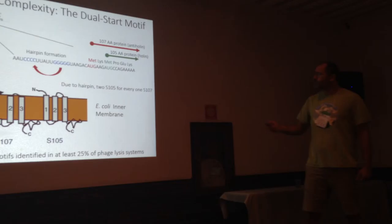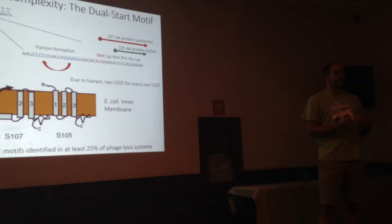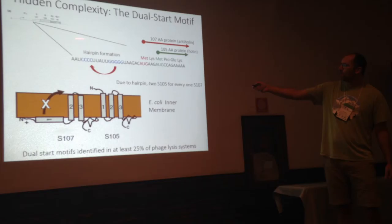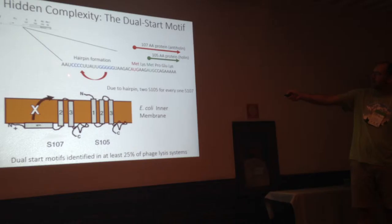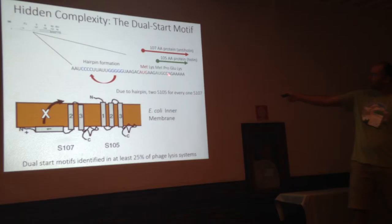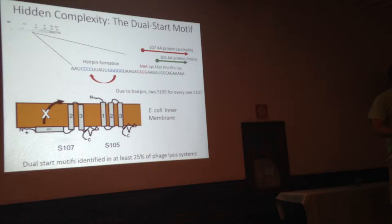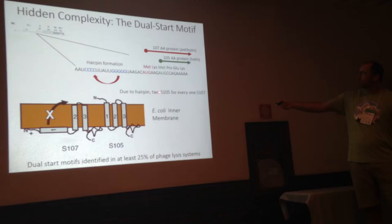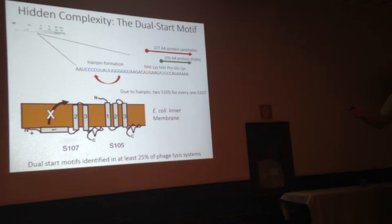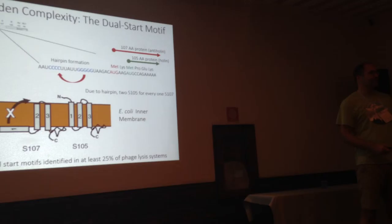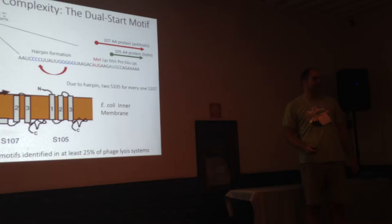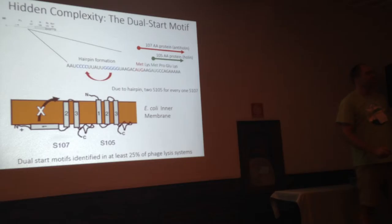The control of how these two proteins are expressed is regulated by a hairpin in the mRNA upstream of the two start codons. When this hairpin is closed, you see the self-complementarity — initiation starts from the first met codon. When the hairpin is open, initiation starts at the second codon. Because of the nature of this mRNA, two S105 molecules are made for every anti-holin made. So out of every three molecules of protein expressed from this operon, two are functionally inactive.